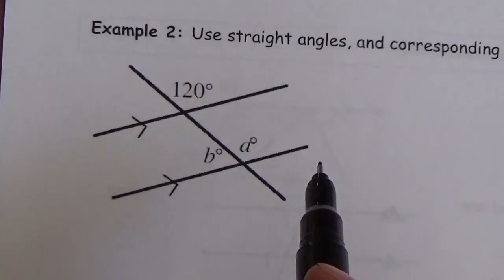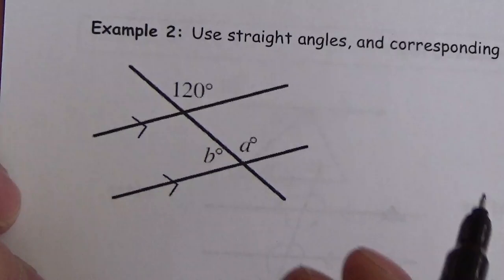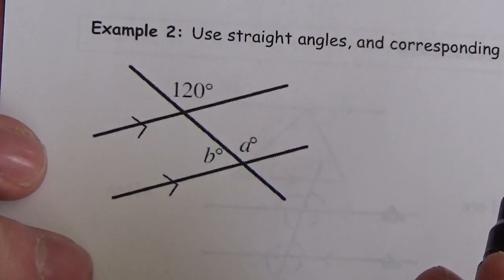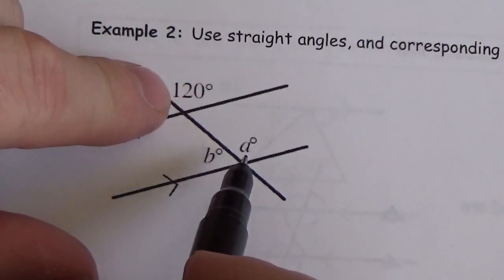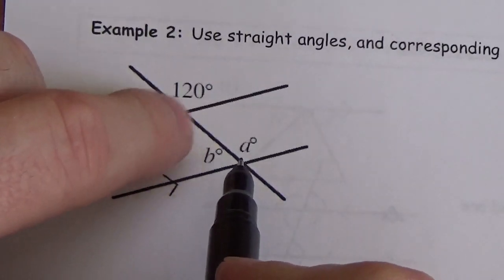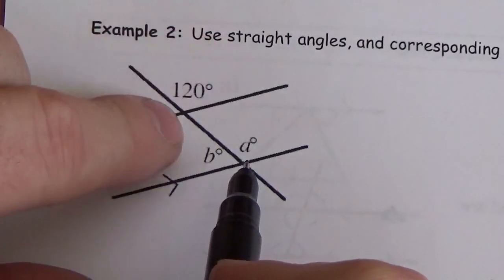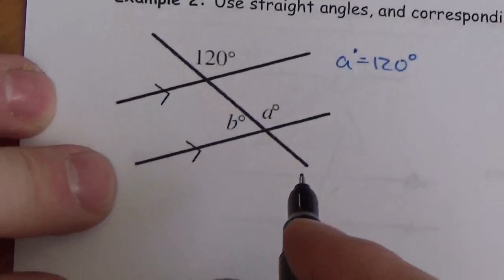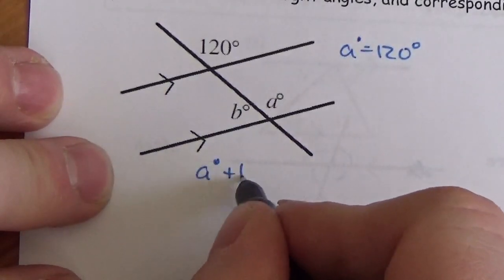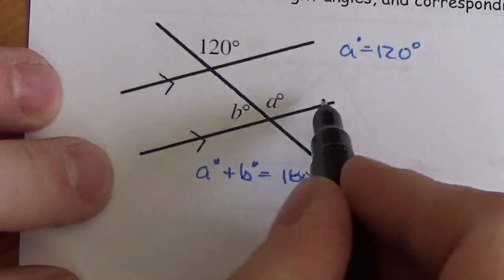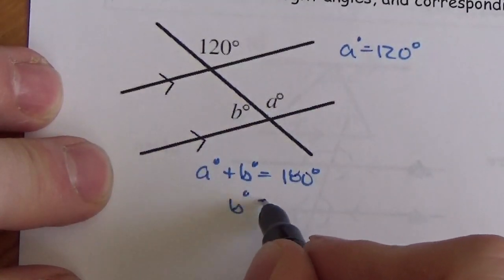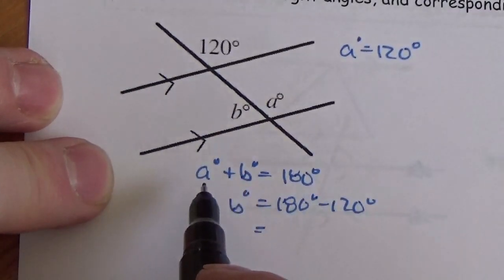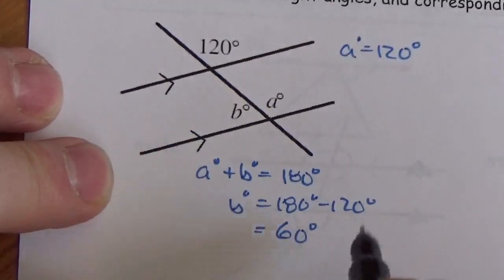In this example, we use straight angles and corresponding angles to calculate the marked angles A and B. I know right away that A and 120° are corresponding — looking at the vertex, I go up and bump into 120°, so angle A must be 120 degrees. Then I know that A and B must be 180° because they're both on a straight line, so B equals 180° minus 120°, which gives 60 degrees.